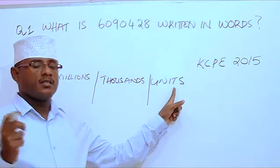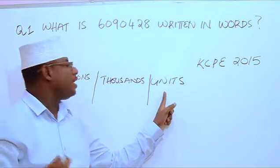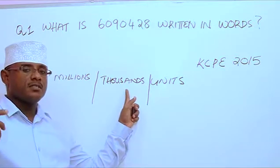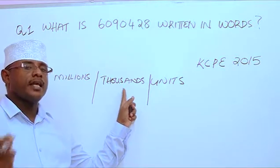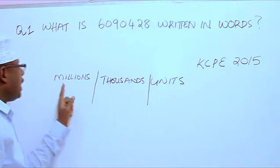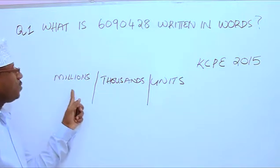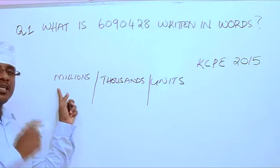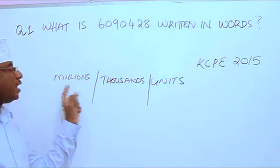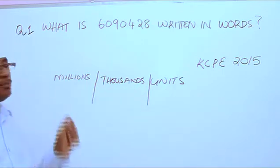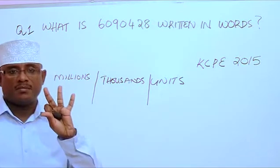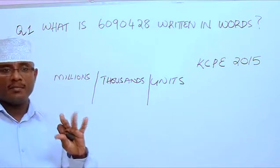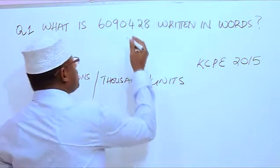tens and hundreds. Under thousands we have thousands, ten thousands, and hundred thousands. Under millions we have millions, ten millions, and hundred millions. Each spot can take up to three digits.